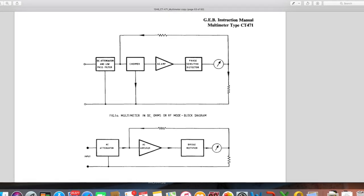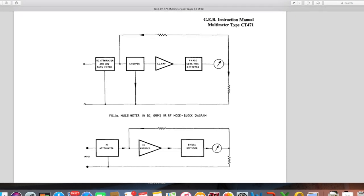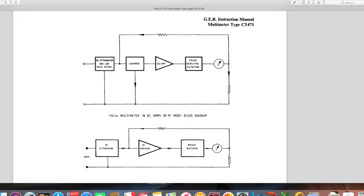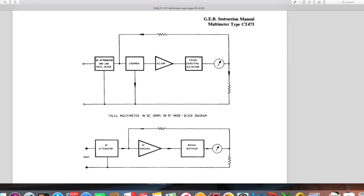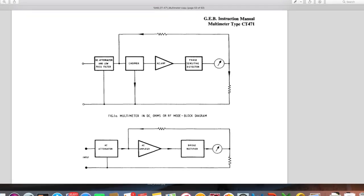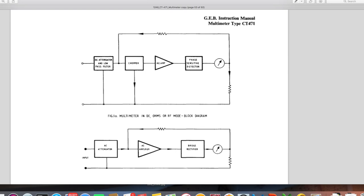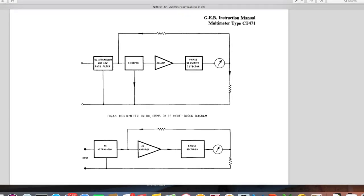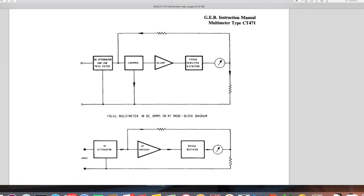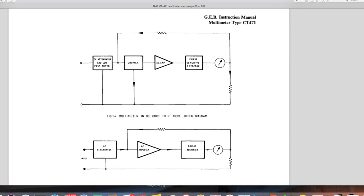You notice also there's a feedback loop from the output of the meter. And similarly for AC, if you're measuring AC voltages it doesn't go via the chopper, it goes straight into the amplifier.